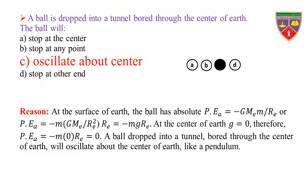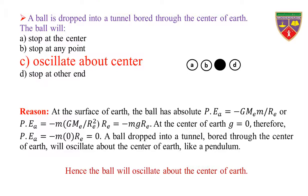Reason: at the surface of Earth, the ball has gravitational potential energy equal to −GMₑm/Rₑ, where Mₑ is the mass of the Earth and Rₑ is the radius of the Earth. At the center, g = 0, therefore the absolute potential energy is zero. So, a ball dropped into a tunnel bored through the center of Earth will oscillate about the center like a pendulum. Hence, the ball will oscillate about the center of Earth.